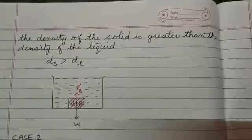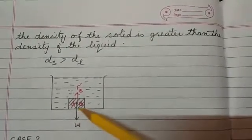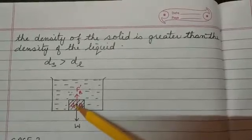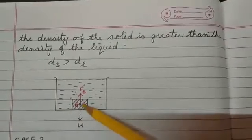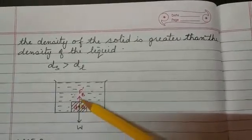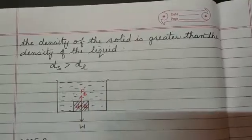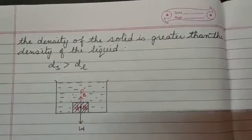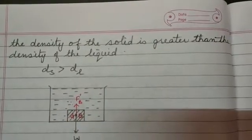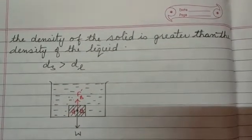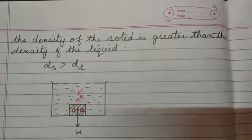For case one, when drawing the diagram, because the weight is more, draw a bigger arrow in the downward direction, and because the up thrust is lesser, draw a smaller arrow in the upward direction. You can use two different colors. Because the body is sinking, show the body at the bottom of the container, as seen in the first stage of the experiment.